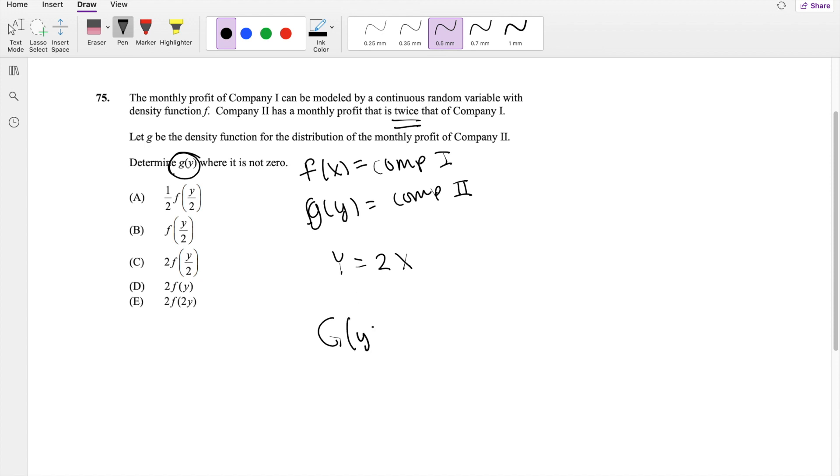And because we know that big Y is equal to 2X, we can just plug that in here. Y is equal to 2X is less than y. And this is equal to the probability that X is less than Y over 2.